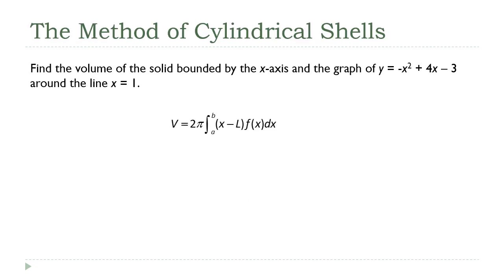I got the formula for cylindrical shells here. Volume is equal to two pi integral from a to b, x minus l times f of x dx. Now remember that l, that comes from the axis of rotation. Since we're revolving around x equals one, l is going to be one. If I substitute that into the formula, we get two pi integral a to b, x minus one times f of x dx.